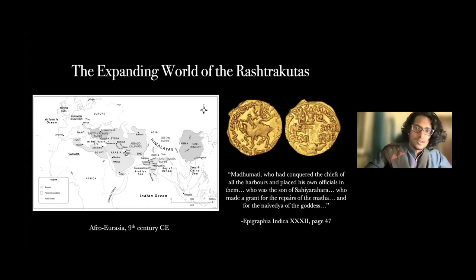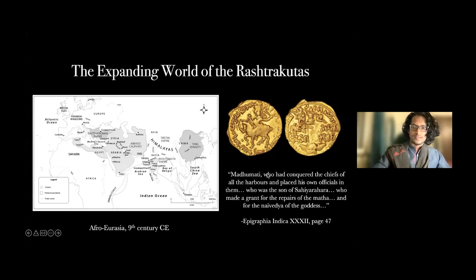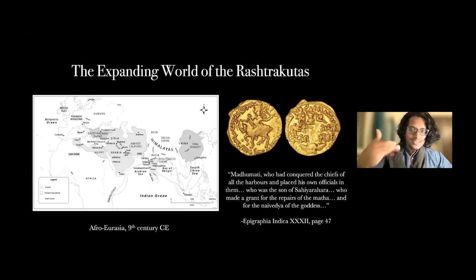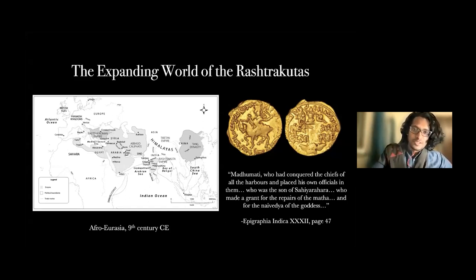There are even more examples of how cosmopolitan the Rashtrakutas were. An inscription left by an individual called Madhu Malti — the son of Sahih Arahara, a Sanskritization of Muhammad ibn Shehriyar, a Persian who had settled in Sanjan in southern Gujarat — claims 'I have conquered the chiefs of all the harbors' and made grants for the goddess Durga. Just as the Rashtrakutas presented themselves to the Arab world, Arabs and Persians were also presenting themselves in profoundly Indian ways. This period from 600 to 1200 is one of cosmopolitanism — movement of people, ideas, and goods between the farthest corners of the world.